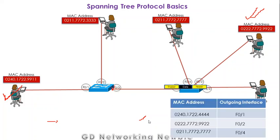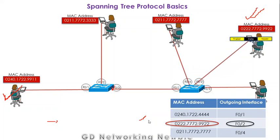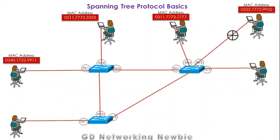The switch finds an entry for the destination MAC address and determines it should forward the packet through port F03. The next switch performs the same thing — it looks into its MAC table, finds the destination MAC, and determines the outgoing interface is F02. This switch also forwards the frame to the ultimate destination using the MAC address.